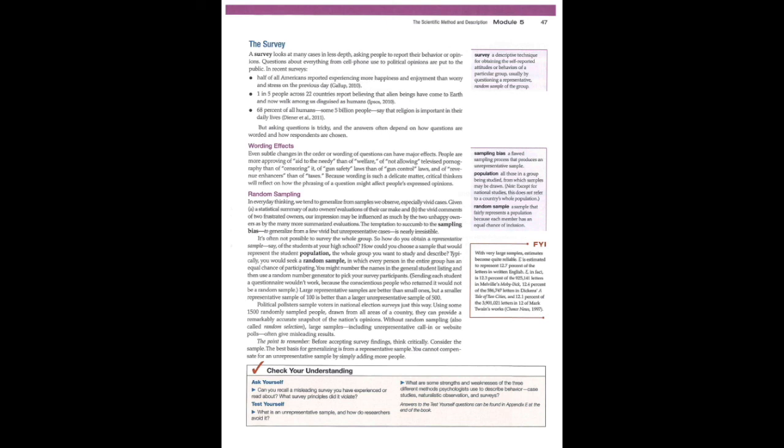It's often not possible to survey the whole group. So how do you obtain a representative sample, say, of the students at your high school? How could you choose a sample that would represent the student population, the whole group you want to study and describe? Typically, you would seek a random sample in which every person in the entire group has an equal chance of participating. You might number the names in the general student listing, and then use a random number generator to pick your survey participants. Sending each student a questionnaire wouldn't work, because the conscientious people who returned it would not be a random sample. Large representative samples are better than small ones, but a smaller representative sample of 100 is better than a larger unrepresentative sample of 500.